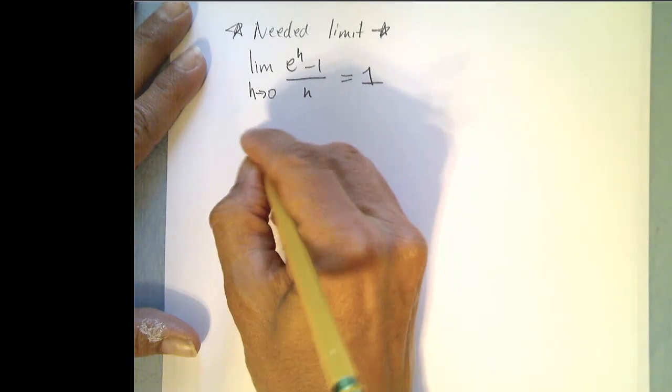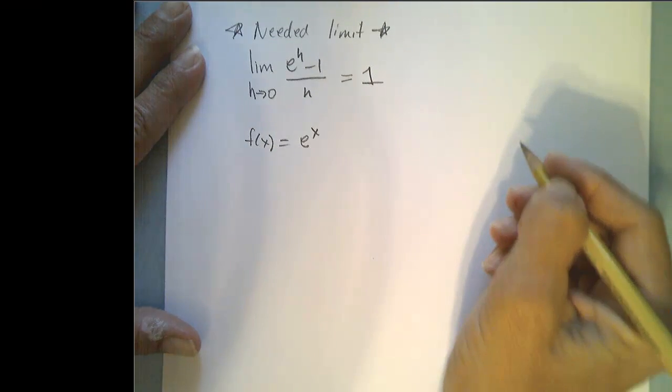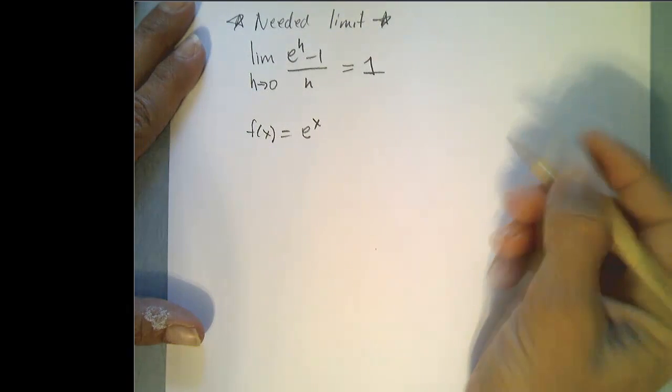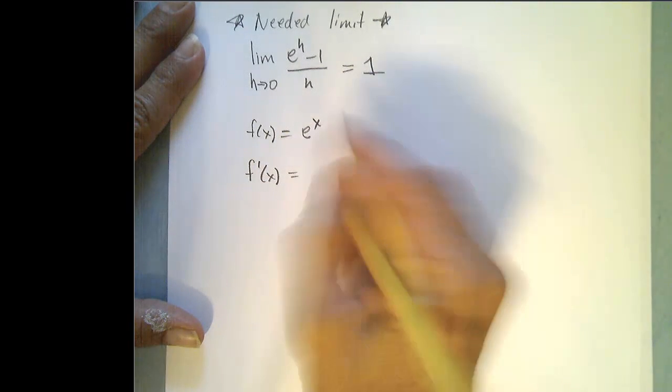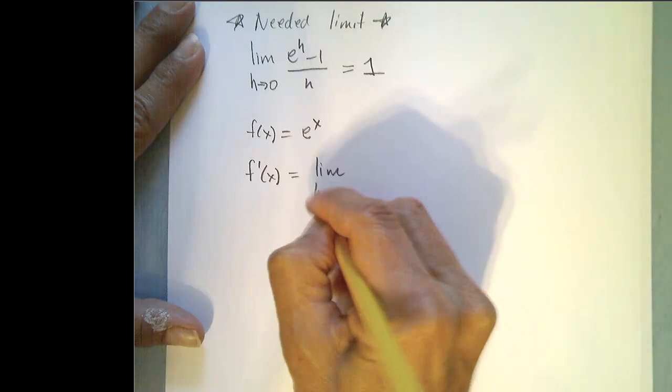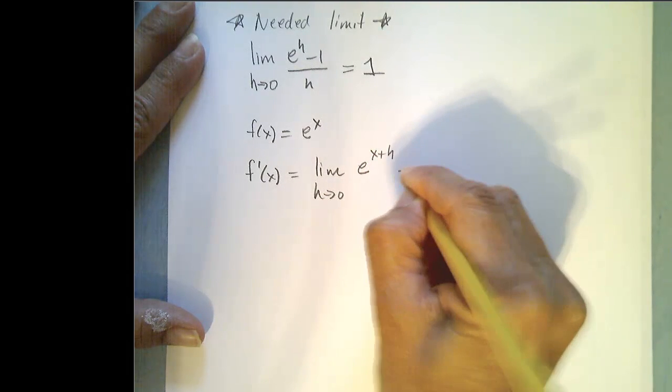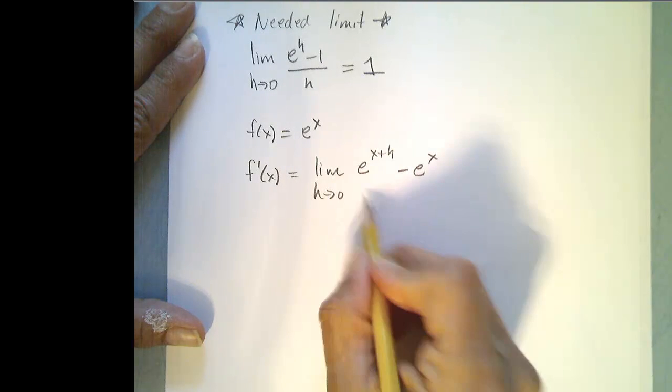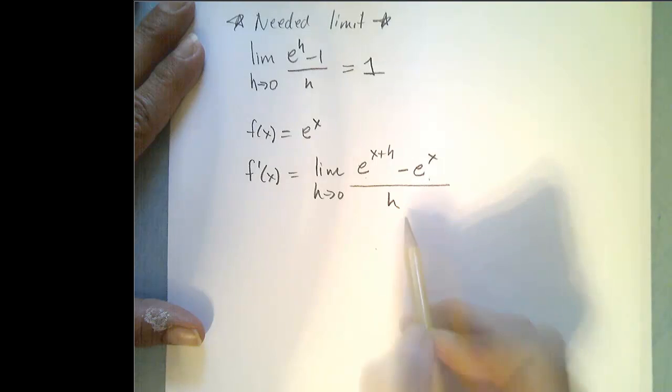Alright, so let's now go about finding the derivative of f of x equals e to the x. Let's go back to our definition. So the derivative is the limit as h goes to 0 of e to the x plus h minus e to the x all over h, right? There's my f of x plus h minus f of x all over h.